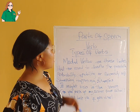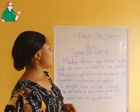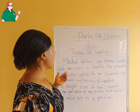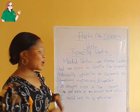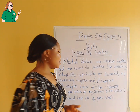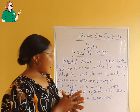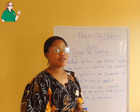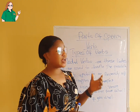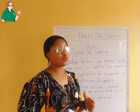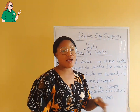So today we'll be talking about modal verbs. This is the second type of verb that we have. Modal verbs are those verbs that are used to denote the possibility, probability, capability, or necessity of something happening. These are verbs used to say the possibility of something that could happen.